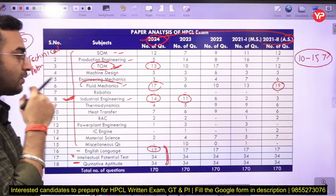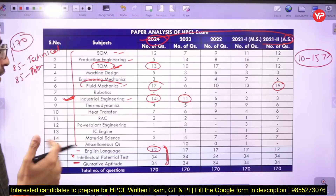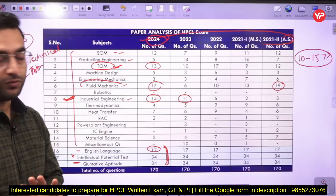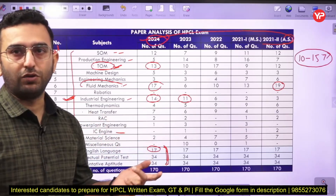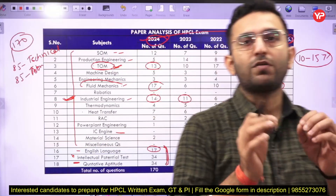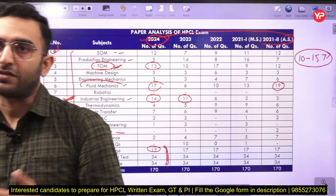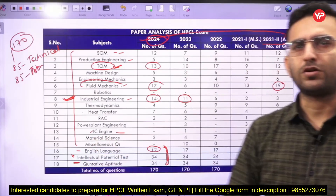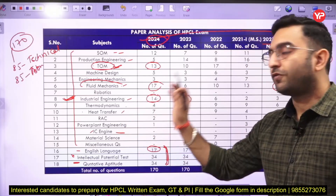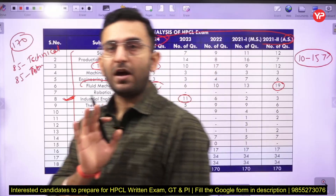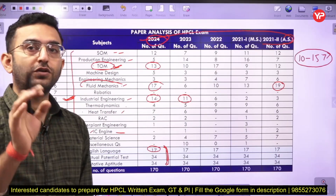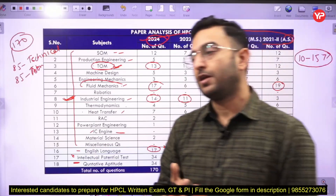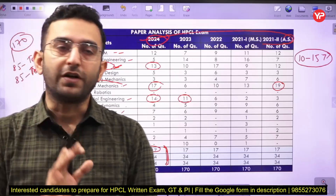Now coming to the thermal engineering part, which includes thermodynamics, heat transfer, power plant, RAC, and IC engines. Thermodynamics and heat transfer are going to be important for you. From IC engines, there are very few chances they will ask questions — typically just efficiency calculations for Otto cycle, diesel cycle, and dual cycle, or questions on measuring fuel quality. So IC engines are not so important. For thermodynamics, focus specifically on properties of pure substances: the Mollier diagram, Maxwell's equations, critical point, and triple point topics have been covered in recent years.